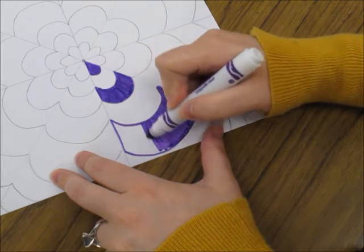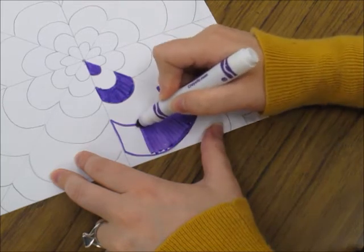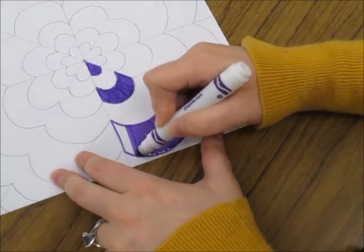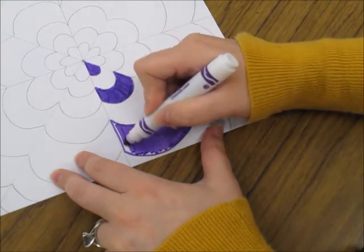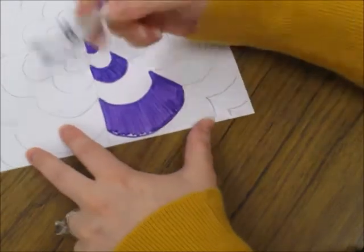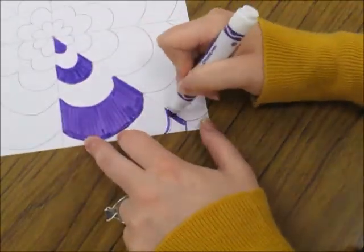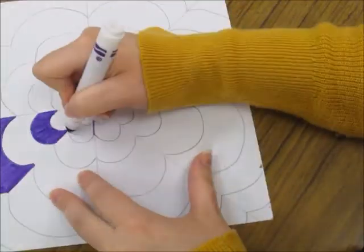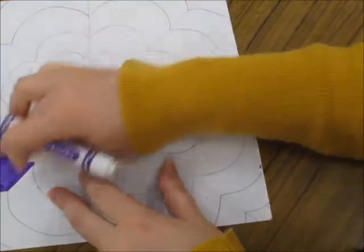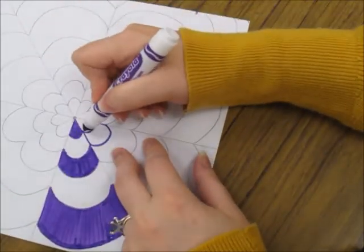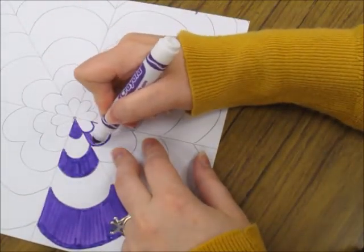I'm using my marker like a paintbrush, using long lines going the same direction. If there's bits that I've missed I can always go back and cover them up. Once you're done with your first shape, when you move to the next ones you're going to trace and color the opposite shape.